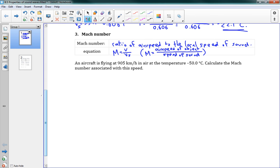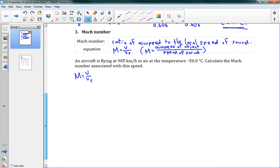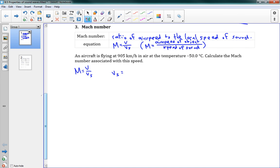Now we have an aircraft flying at 905 kilometers per hour in air at the temperature of negative 50 degrees Celsius. Calculate the Mach number associated with this speed. Well, our equation is, M is equal to V over Vs. And we've got a few things here. First we're going to need to figure out the speed of sound here. So we can say that Vs is equal to 331.4 plus 0.606 times negative 50 degrees Celsius. That's 301.1 meters per second. That's our speed of sound.